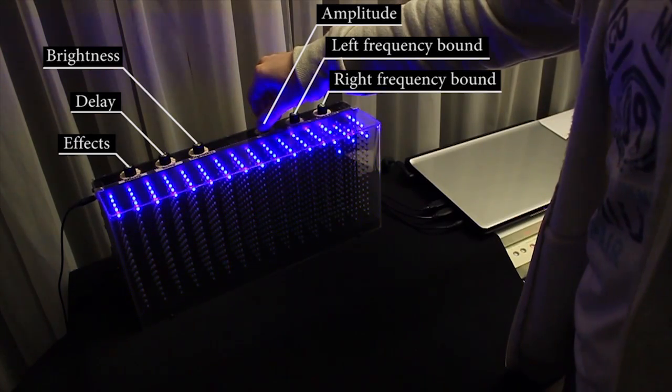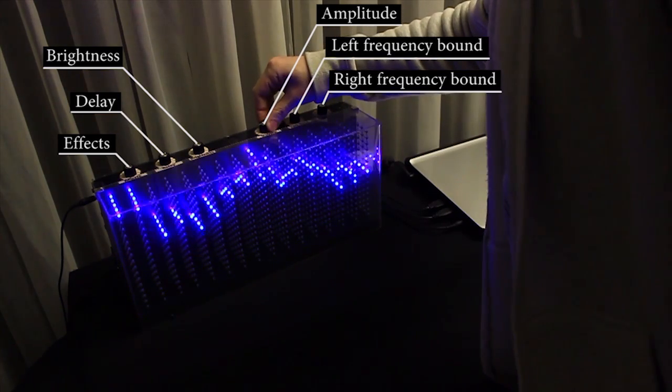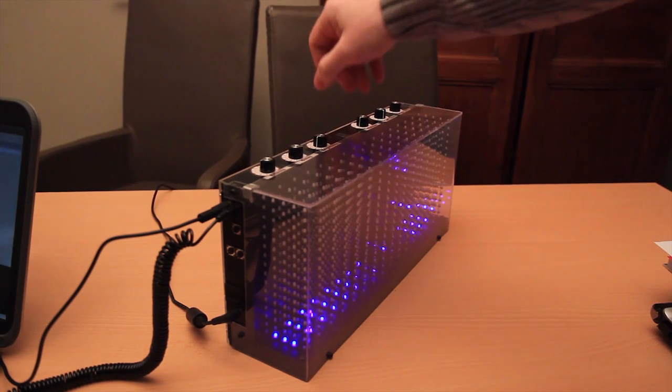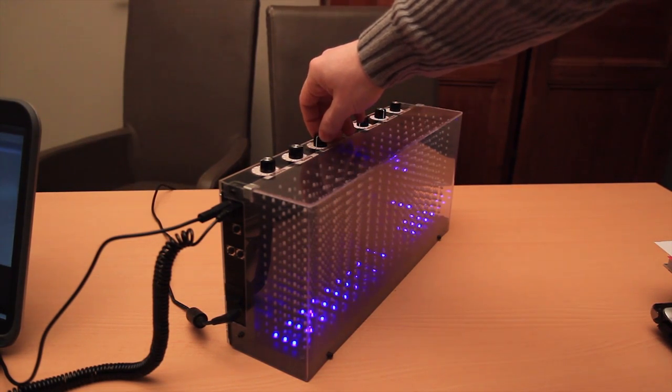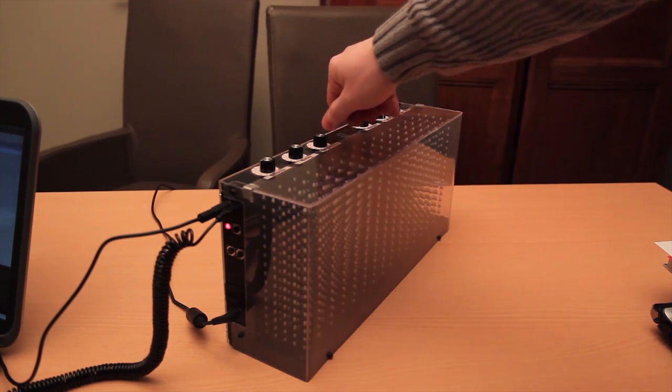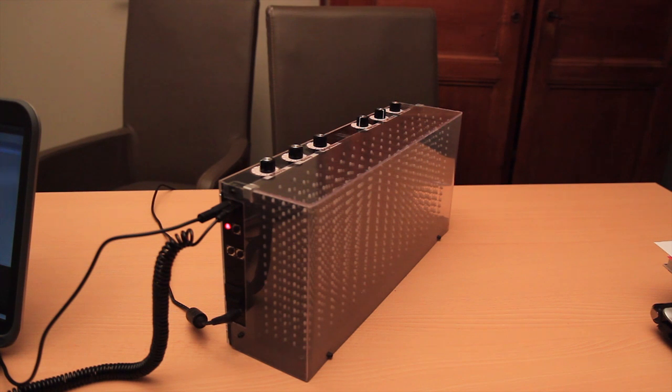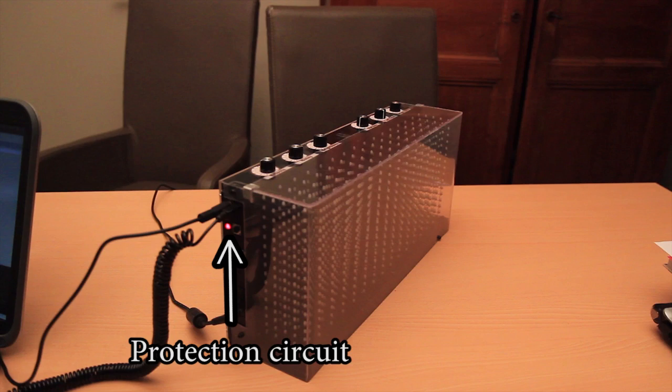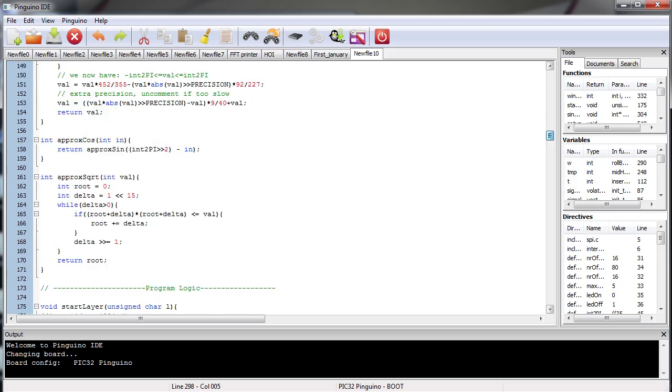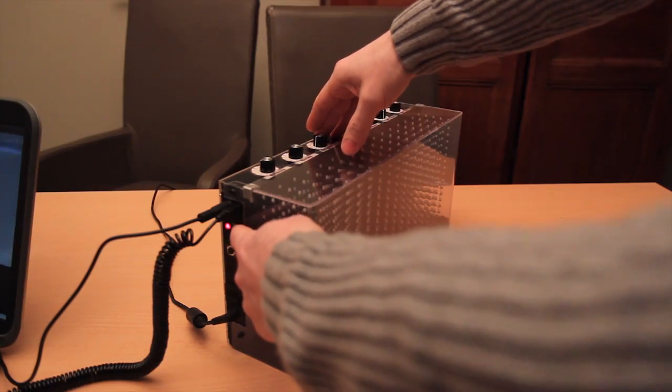On the top of the spectrum analyzer, there are 6 knobs to adjust different settings. Finally, there is a protection circuit. Due to an error in the software, it's possible that you accidentally destroy the LEDs by overdriving them. The protection circuit prevents this by turning off the LEDs. The activation of the protection circuit is indicated by a red LED on the side of the spectrum analyzer. The protection circuit will keep the LEDs off until the error in the software is fixed and the protection circuit is reset.